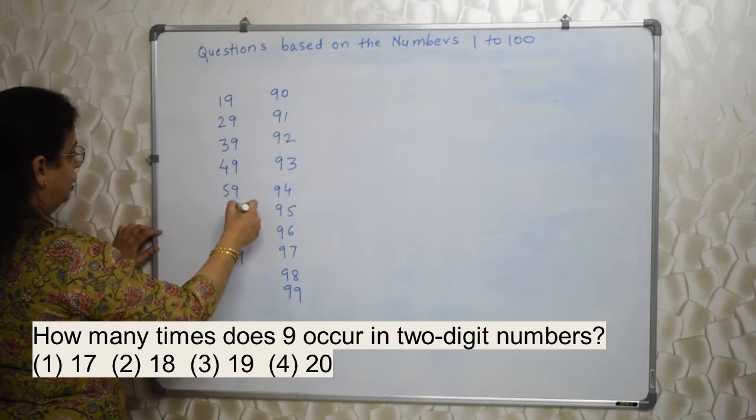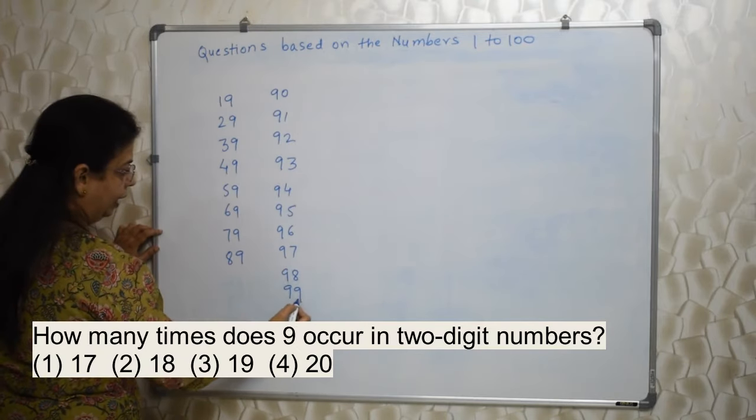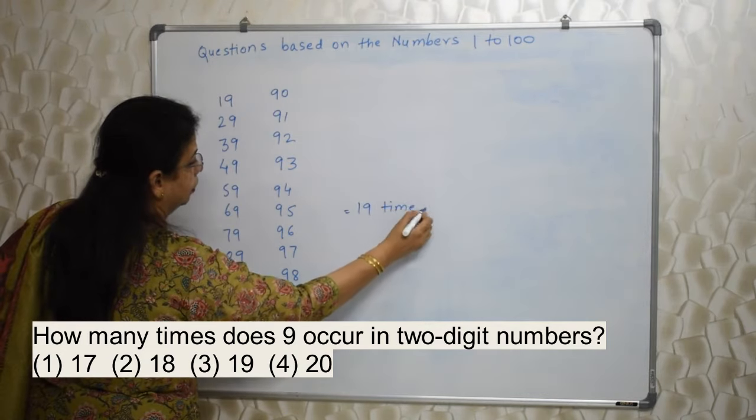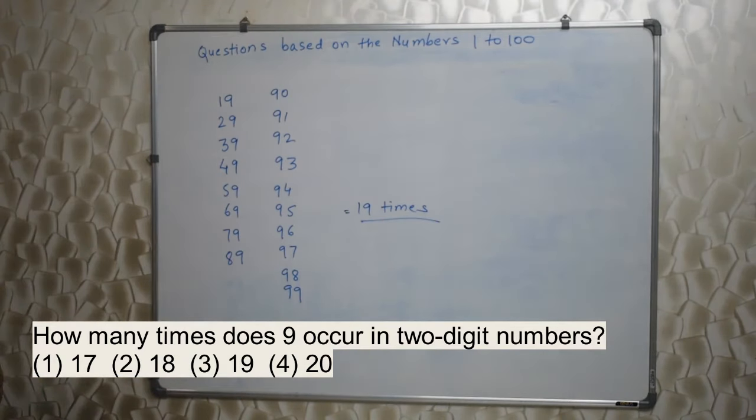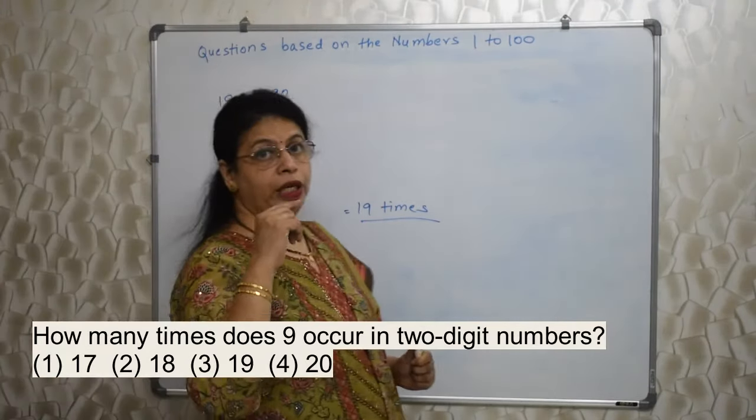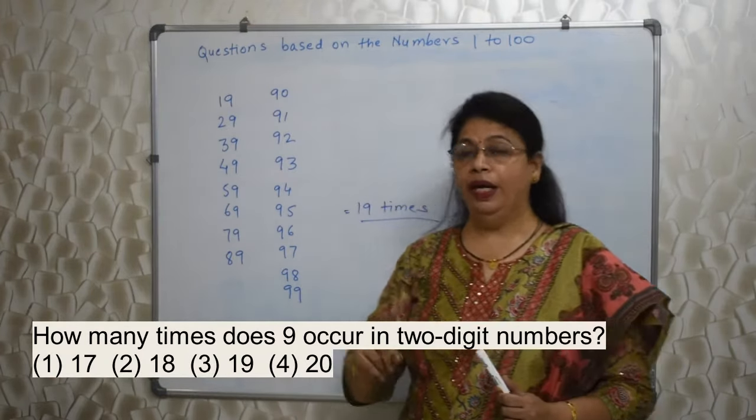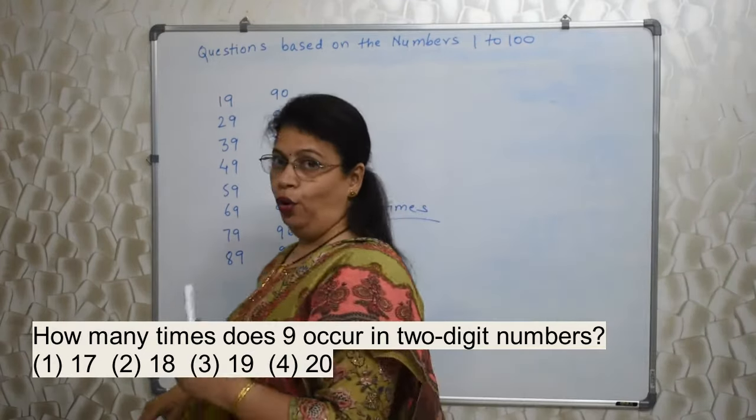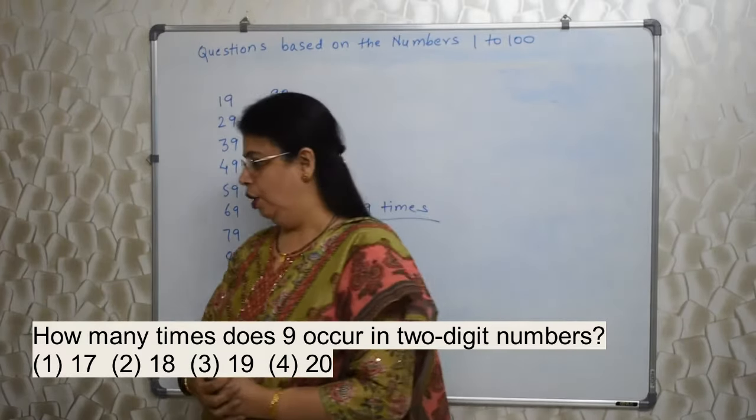Here the question is not how many numbers, but how many times does 9 occur. In number 99, 9 comes 2 times. So this number counts as 2. If they would have asked how many numbers contain 9, then 99 would have been 1 number. But here they are asking how many times 9 occurs. So counting: 1, 2, 3, 4, 5, 6, 7, 8, 9, 10, 11, 12, 13, 14, 15, 16, 17, 18, and 19. So 19 times is the answer. Please be careful.